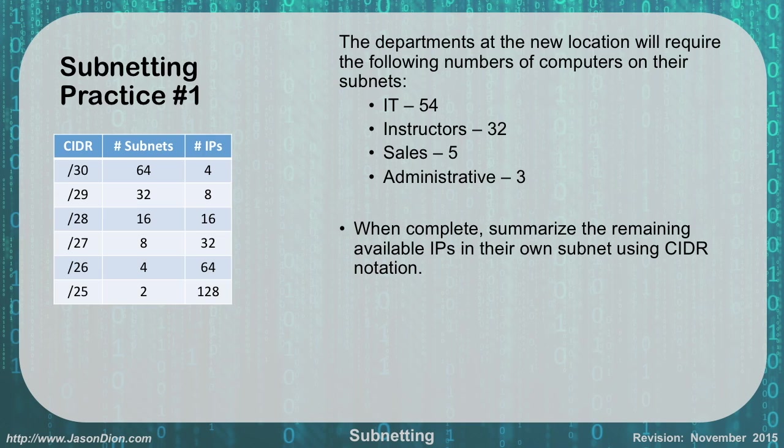IT needs 54, instructors need 32, sales needs 5, and administrative needs 3. When complete, you're going to summarize these subnets into their own subnets using slash or CIDR notation.